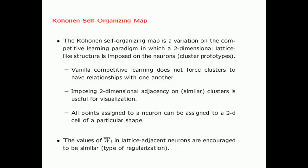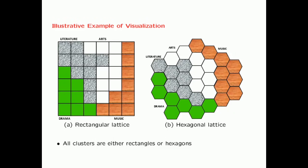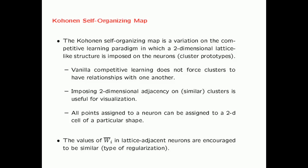All points assigned to a neuron can be assigned to a 2D cell of a particular shape — with a rectangular lattice, points are assigned to a rectangular cell, and with a hexagonal lattice, to a hexagonal cell. The main change we make to the competitive learning paradigm is that we start with neurons which have a certain lattice-like prearrangement among them, and when updating the values of W_i, we encourage the lattice-adjacent neurons to be similar. This is a kind of regularization during learning.